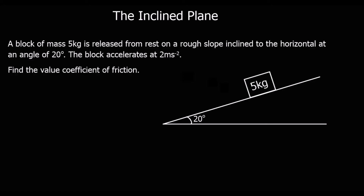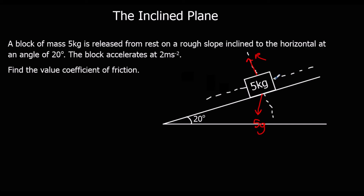Here's another question — pause the video and try this one. This time we're working to find the coefficient of friction. Drawing the forces: we tilt the axes by 20 degrees. We have the normal reaction, a weight of 5G acting vertically down, and friction opposing the motion on the rough slope. The angle in the diagram is 20 degrees because we've tilted the axes by 20 degrees.